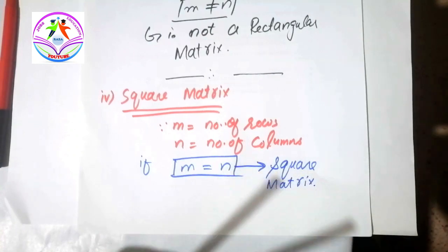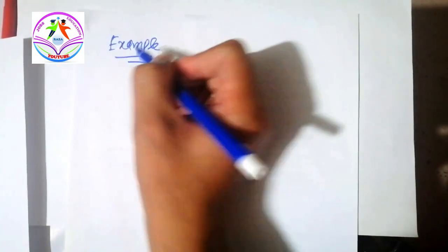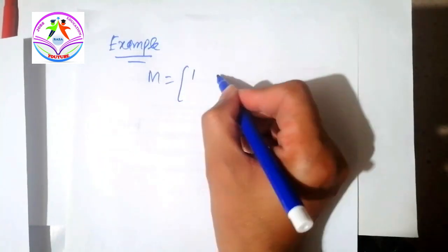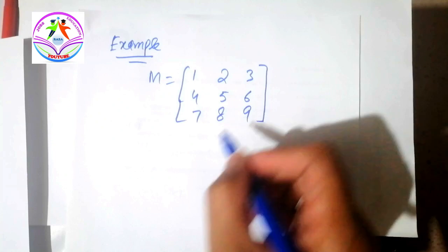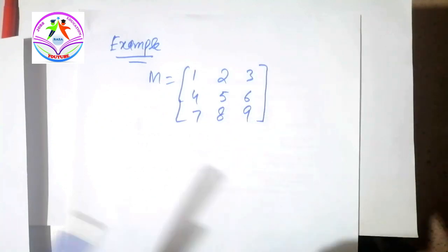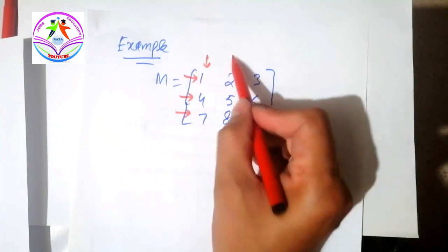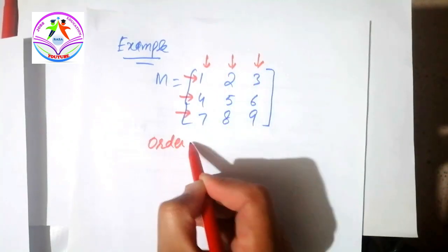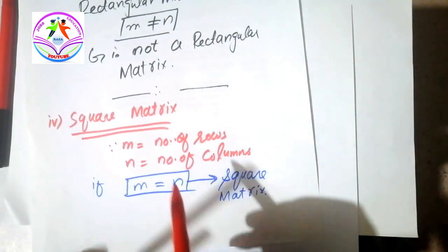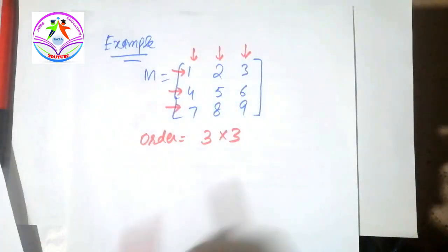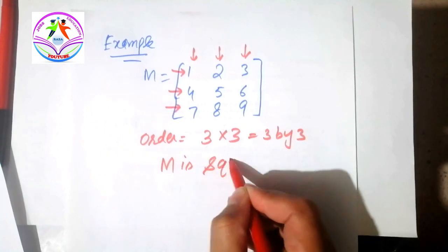Let me give you an example. M is equal to a matrix with elements 1, 2, 3, 4, 5, 6, 7, 8, 9 — a 3×3 matrix. Checking the order: first, second, third row and first, second, third column — the order is 3×3. According to the square matrix condition, m must equal n, meaning the number of rows equals the number of columns. Here 3 equals 3, so M is a square matrix.